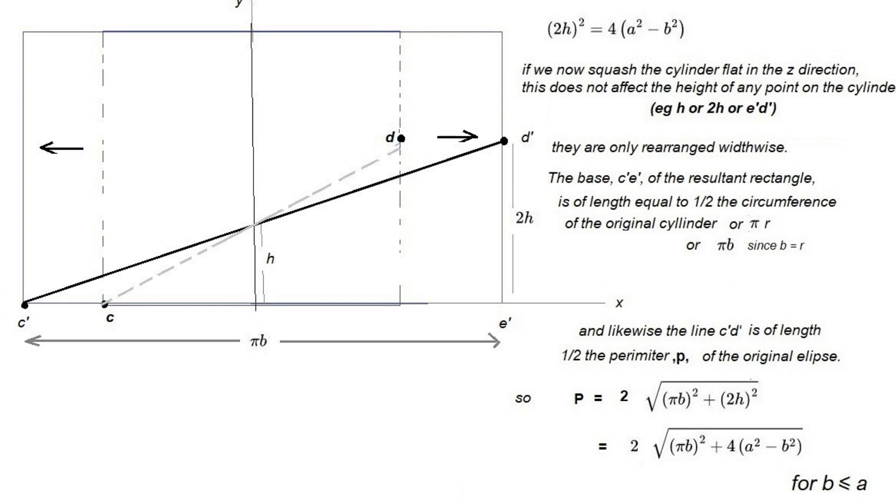The base c'e' of the resultant rectangle is equal in length to one half the circumference of the original cylinder, or πr, or πb.